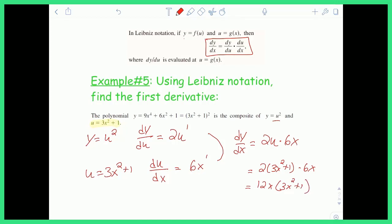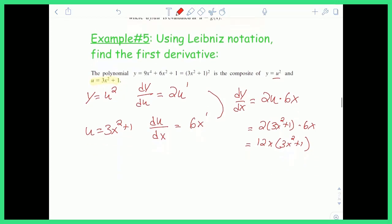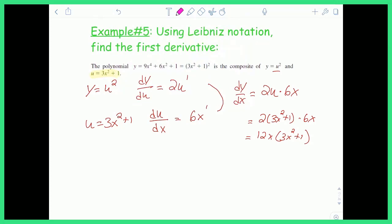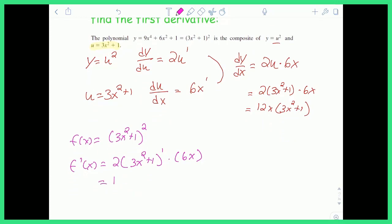It's notable that this function could also be differentiated using the standard chain rule. If f of x equals (3x squared plus 1) squared, then f prime of x using outside-inside: the derivative of something squared is 2 times that something to the first power, times the derivative of the inside, which is 6x. Multiplying 6x by 2 gives 12x times (3x squared plus 1) — the same answer whether using Leibniz notation or the outside-inside chain rule.